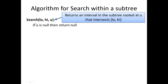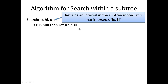Search should return an interval in the subtree rooted at u that intersects [low, high], or null if none exists. The first line is pretty obvious: if u is null, then there's definitely nothing in the subtree rooted at u that intersects [low, high], so we return null. Next, we test if [low, high] intersects the interval of u. If so, we return the interval of u — here we've found an intersection, so we return it.